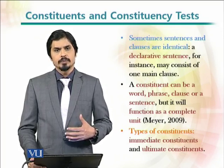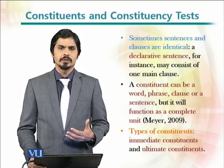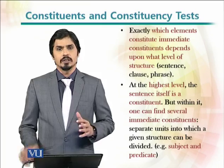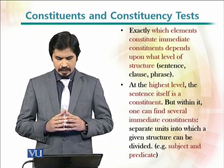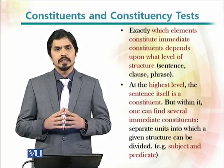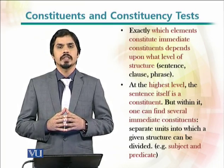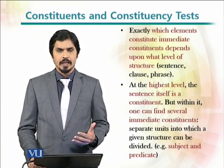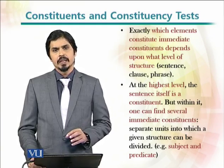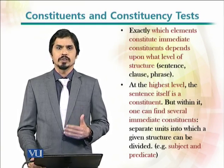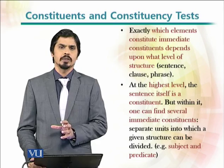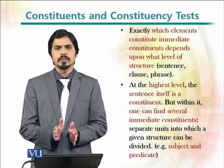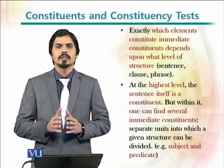There could be various types of constituents — some immediate constituents or ultimate constituents — and it depends on the level we are dealing with. At the highest level, the sentence itself is a constituent, and at the same time this highest-level constituent could consist of immediate constituents known as subject or predicate. So there could be many constituents within a larger constituent.